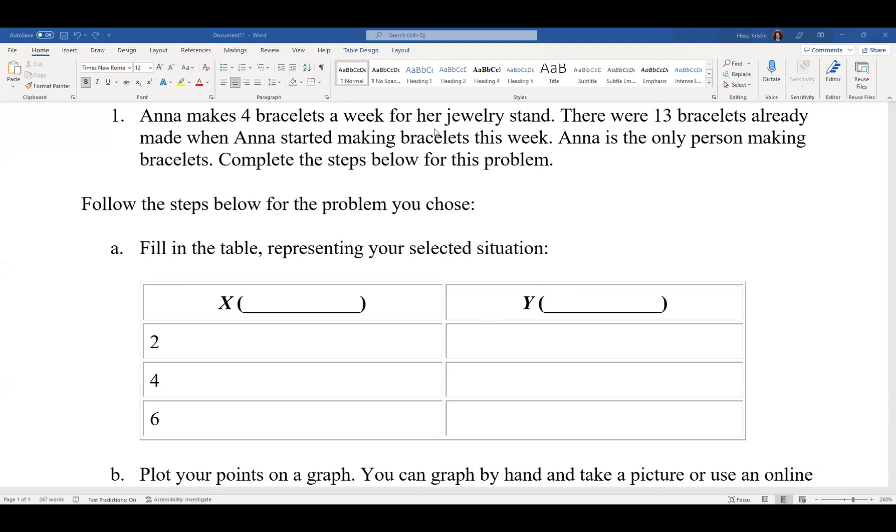We have this situation where Anna's making four bracelets a week for her jewelry stand. I'm going to highlight 'bracelets a week' because that's important information. Also, there were 13 bracelets already. That is also important information. When Anna started making bracelets this week, Anna was the only person making bracelets.